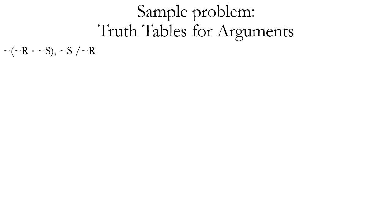Now let's look at some sample problems. We'll start with arguments in symbolic form, make truth tables, and assess validity. The first sample problem gives us the symbolic argument directly: premise one is tilde parentheses tilde R dot tilde S closed parentheses, premise two is tilde S, and the conclusion after the forward slash is tilde R. We construct a truth table with four rows for the two simple propositions R and S.